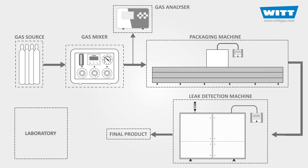This simple schematic gives an overview of the structure of a MAP system. As you can see, it's composed of different parts. To better understand this structure, let's focus on each part of this system one by one.